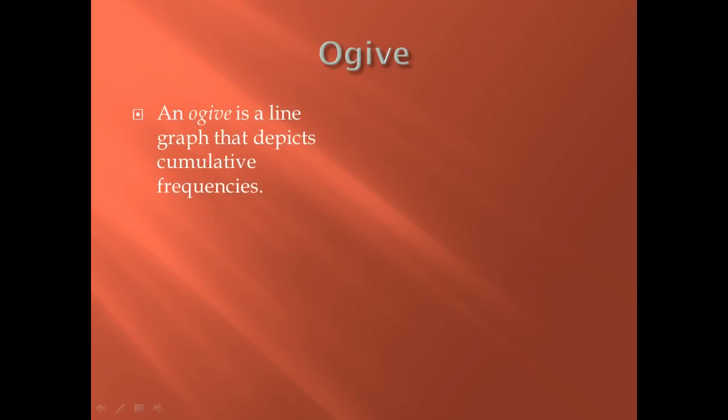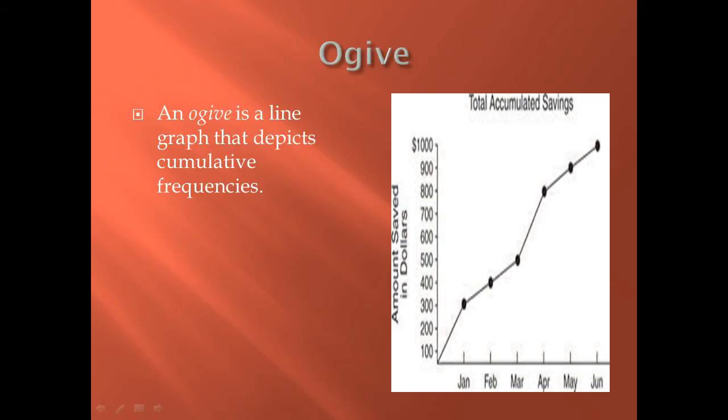An ogive. This is something new. An ogive is a line graph that depicts a cumulative frequency. You can see the one at the right. Obviously, if it's depicting a cumulative frequency, we want to see the line graph going up, not at a constant rate, but always going up.